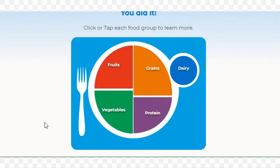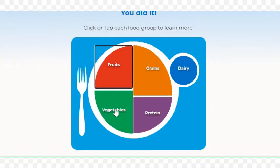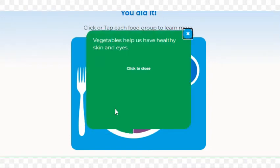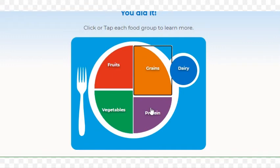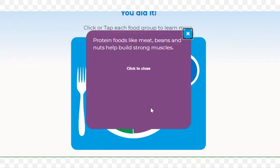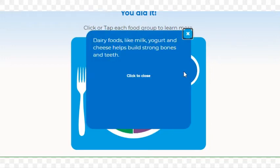You did it! Click each food group to learn more. Fruits help our bodies heal. Vegetables help us have healthy skin and eyes. Grains like bread, cereal, and pasta help turn the foods we eat into energy in our bodies. Protein foods like meat, beans, and nuts help build strong muscles. Dairy foods like milk, yogurt, and cheese help us build strong bones and teeth.